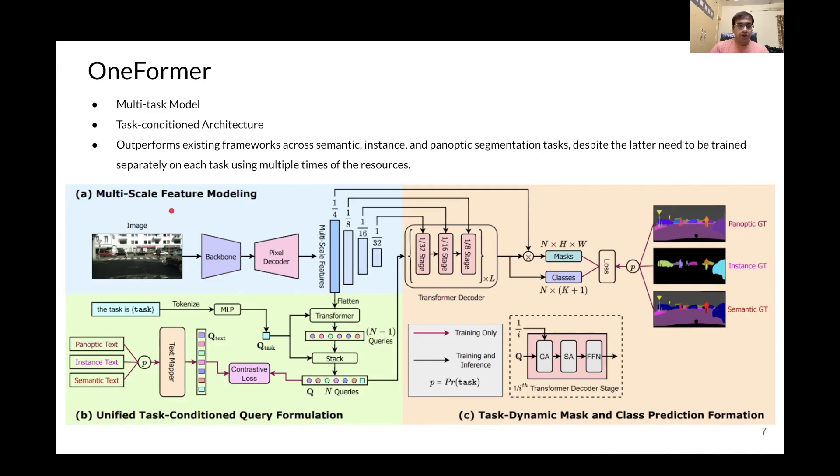OneFormer takes in an image input and a task input in the form of text. The image input is passed through a backbone and a transformer-based pixel decoder to output multi-scale features. The multi-scale features are then fed into a multi-layer transformer decoder to give us the final mask and class predictions, which are then post-processed depending on the task at hand.